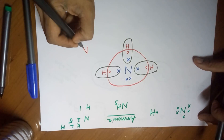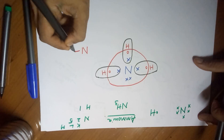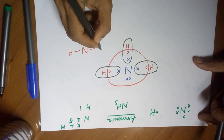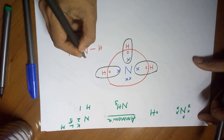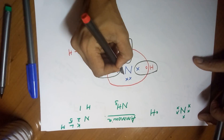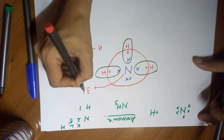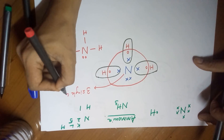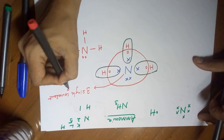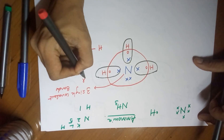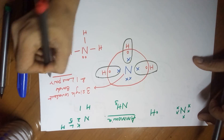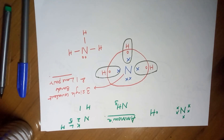Drawing the final structure: nitrogen in the center, with 3 hydrogens — H, H, and H — around it, and 1 electron pair which is the lone pair. So your nitrogen in this case has 3 single covalent bonds and 1 lone pair. That is the structure of ammonia.